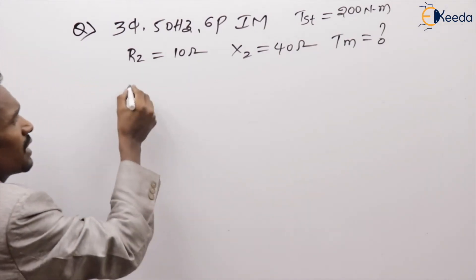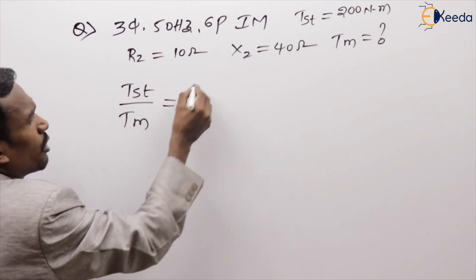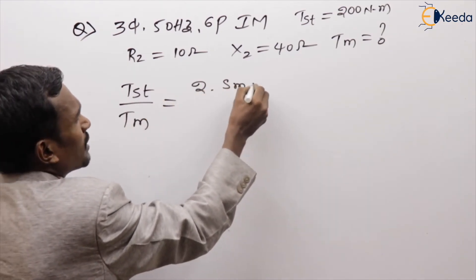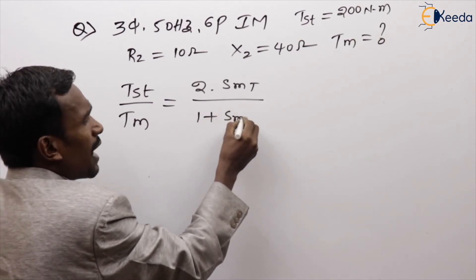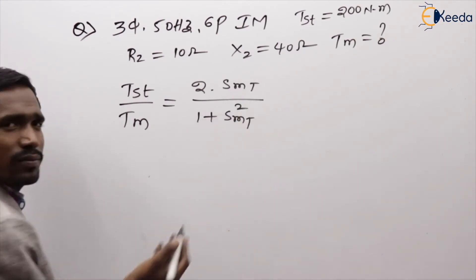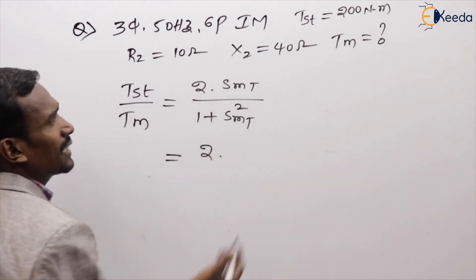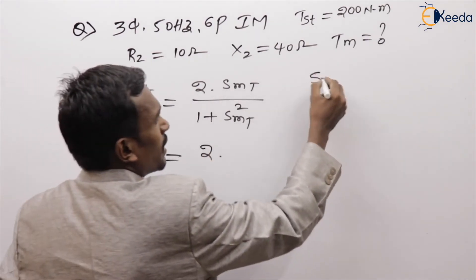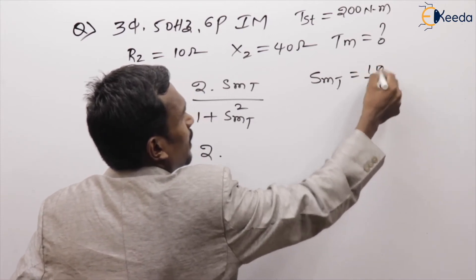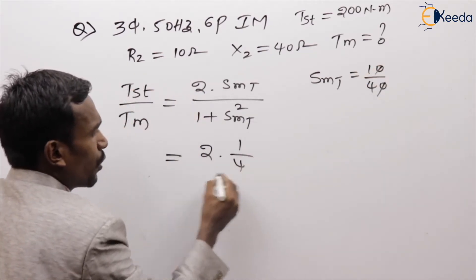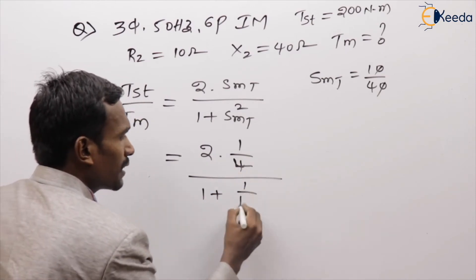The formula: starting torque to maximum torque = 2 × S_MT / (1 + S_MT²). S_MT = R2/X2 = 10/40 = 1/4. So: 2 × (1/4) / (1 + 1/16).